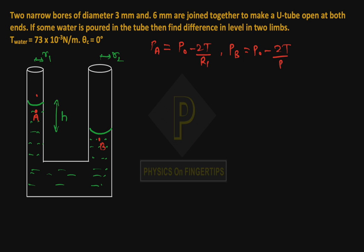PB minus PA equals 2T upon R1 minus 2T upon R2.